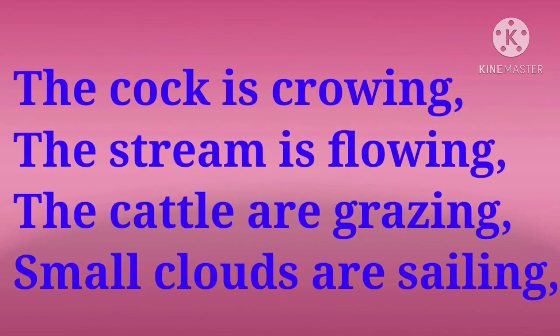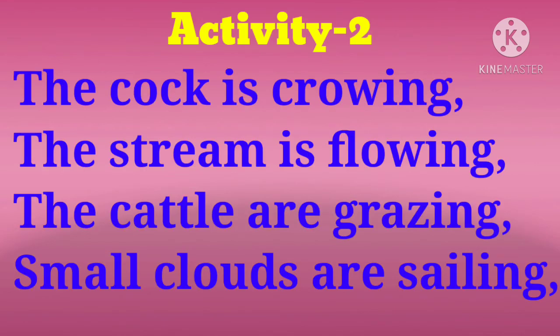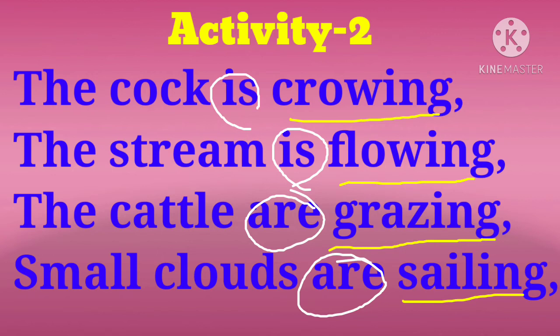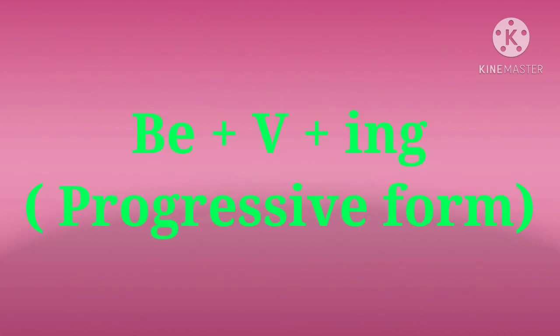Now come back to the poem and underline the verbs ending with -ing. For example, you can see: crowing, flowing, grazing, sailing. Mark that the words before these verbs are 'is' or 'are' — we call them b-verbs. So b-verb plus main verb plus -ing is called a progressive tense verb.